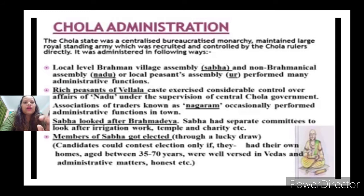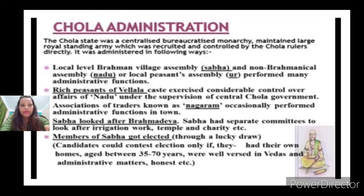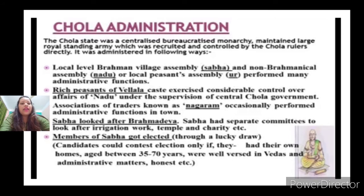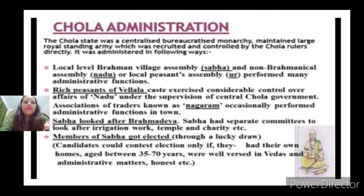Now we will study the administration of the Cholas. The Chola state was a centralized, bureaucratic monarchy where the ruler made decisions for the entire kingdom. The Chola empire maintained a large royal standing army, which was recruited and controlled directly by the Chola rulers. At the local level, Brahman village assemblies were known as 'Sabha,' and two types of assemblies were formed.